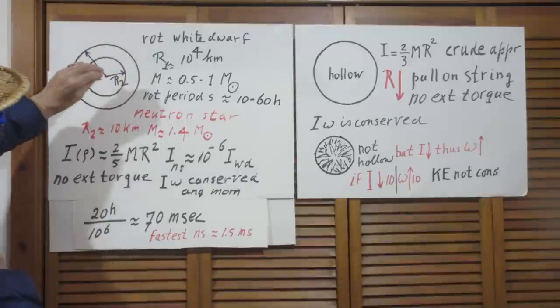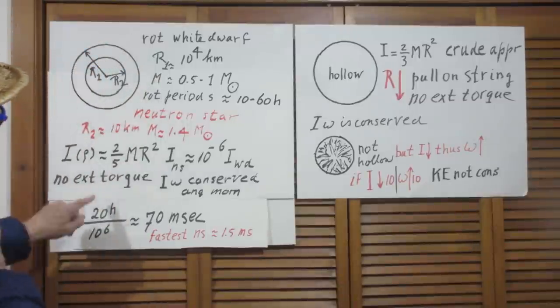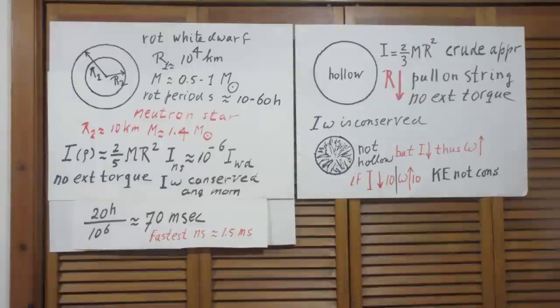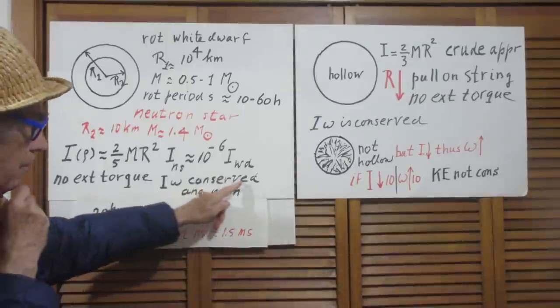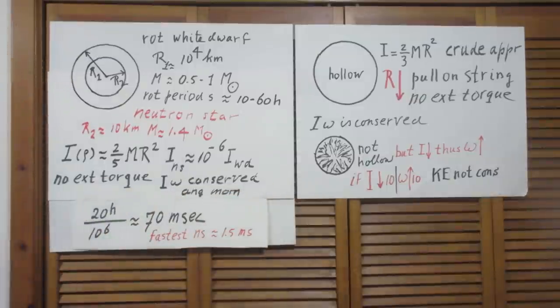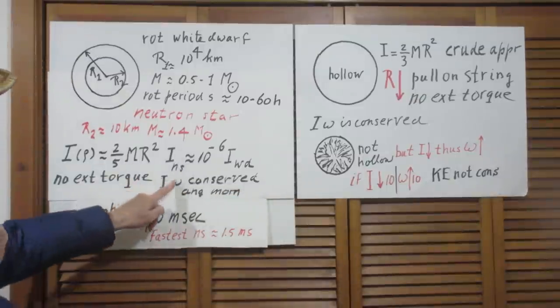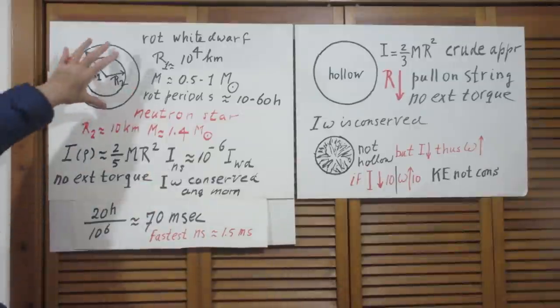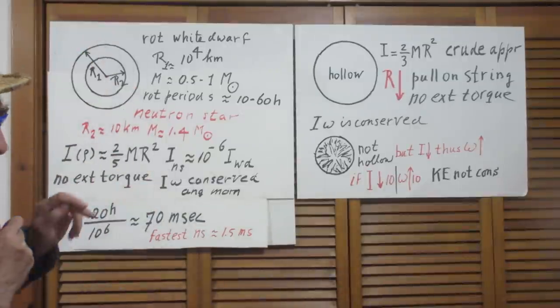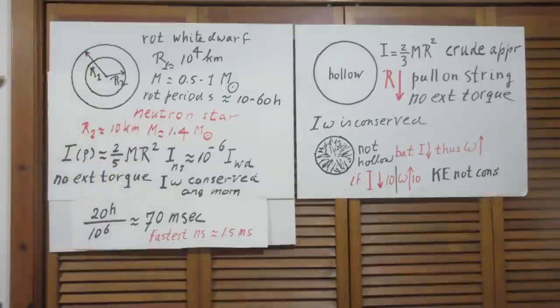And this gravitational collapse is not an external torque. Therefore, angular momentum must be conserved. Therefore, I omega of the white dwarf must be the same as I omega of the neutron star.